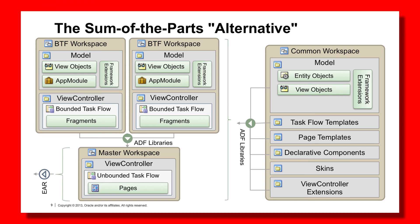Just the other thing to note here is the framework extensions — the ADFBC framework extension classes which you create yourself. You can now have multi-tiers of those, such that the ones in the Common workspace have bug fixes and overridden code that apply to all Bounded Taskflow workspaces, but the framework extensions in the individual Bounded Taskflow workspaces only apply the fixes, the overridden code, and whatever other functionality you put in there to the Bounded Taskflow workspace that you code those in.